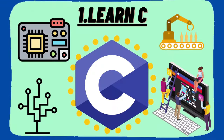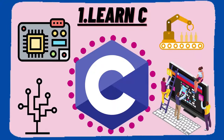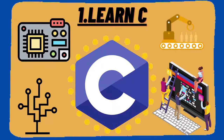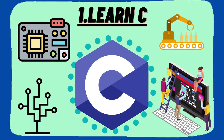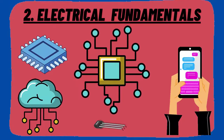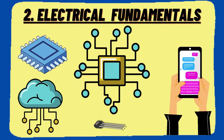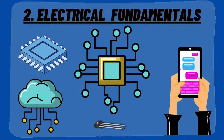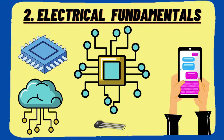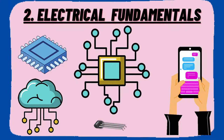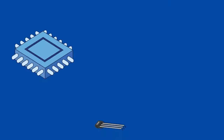Starting C from the first year means you can practice a lot and become thorough with the language, which is an additional advantage. The second important thing to learn is electronic fundamentals — your core subject. You should be thorough with the subjects you will study over the next four years. Don't just read; apply the knowledge practically and learn about the real-world applications.